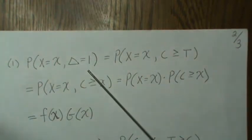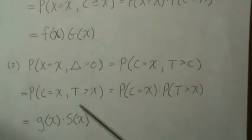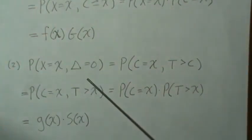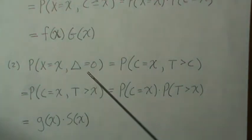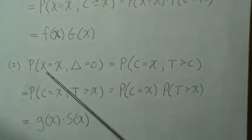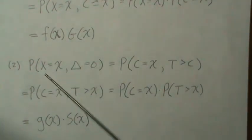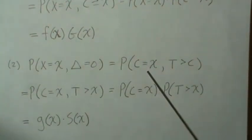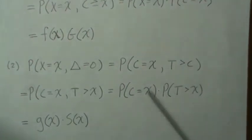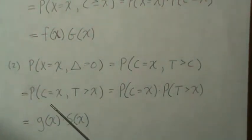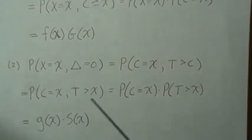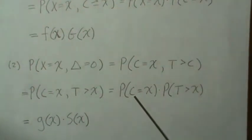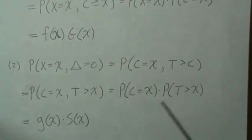Okay, and it leads to the same conclusion. So let's look at the second case where delta is zero. This means that we observe the censoring time — x is the censoring time because of this. And so the failure time is greater than c. Here we said c is x, so the failure time is greater than x. They're independent, so we can break them apart. So this is the density of the censoring time, and this is the survival function for the failure times.